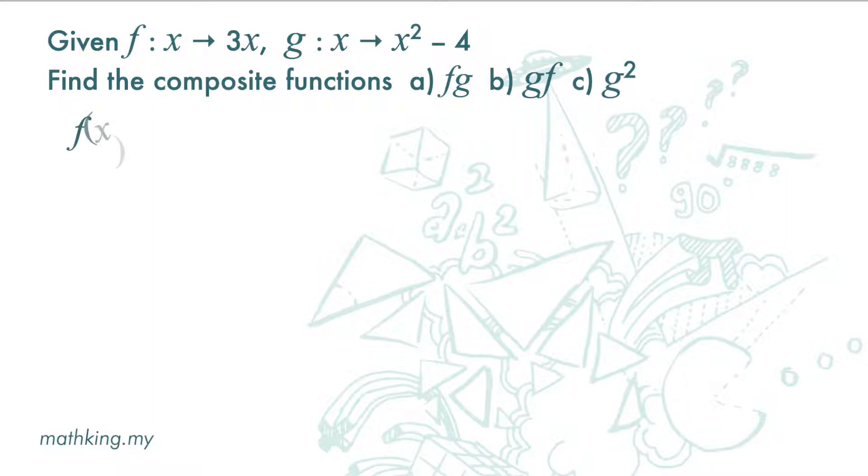So f(x) is 3x and g(x) is x squared minus 4.